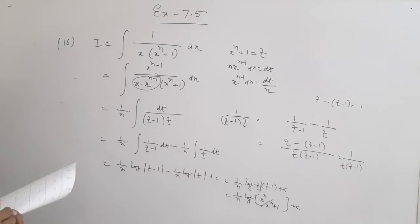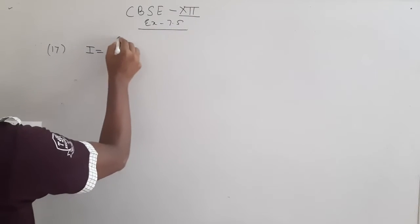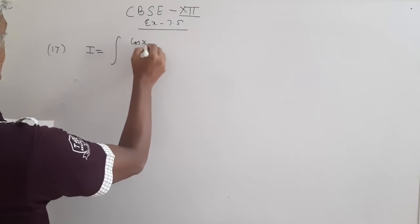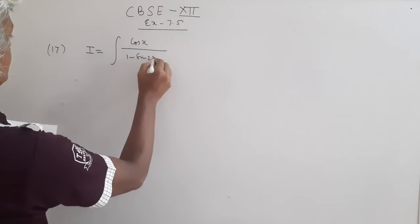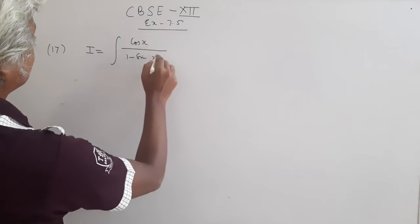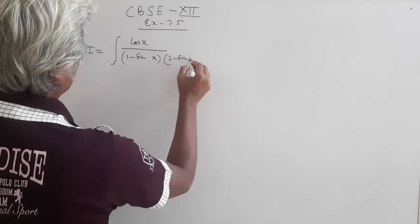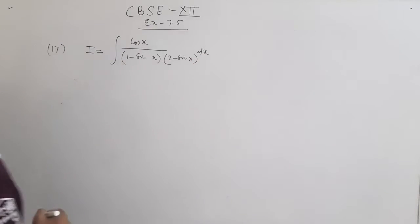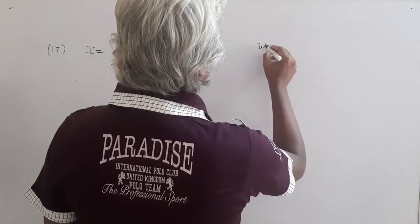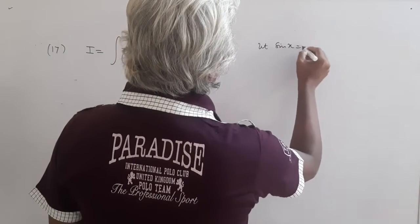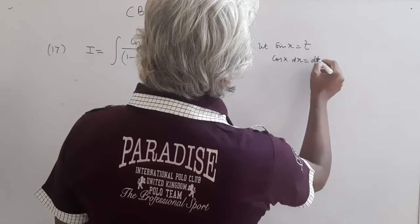Now let me go to Question 17. Find the integral I of cos x over (1 minus sin x)(2 minus sin x). The first thing we do is let sin x equal t, then on differentiation this gives cos x dx as dt.